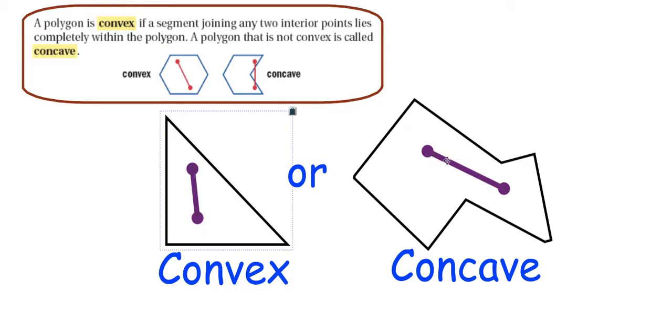The opposite is this shape. I have my two points again connected with a line segment, but when I move this around, I can definitely find spots where the line does not leave the polygon.